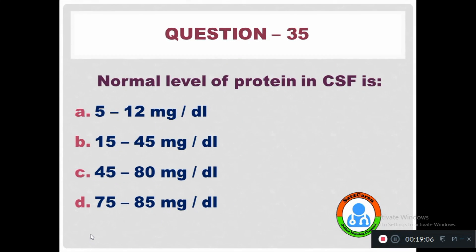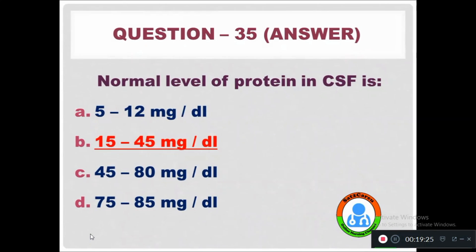Question 35: Normal level of protein in CSF is — Option A: 5 to 12 mg/dL. Option B: 15 to 45 mg/dL. Option C: 45 to 80 mg/dL. Option D: 75 to 85 mg/dL. The normal protein level in CSF is 15 to 45 mg/dL.